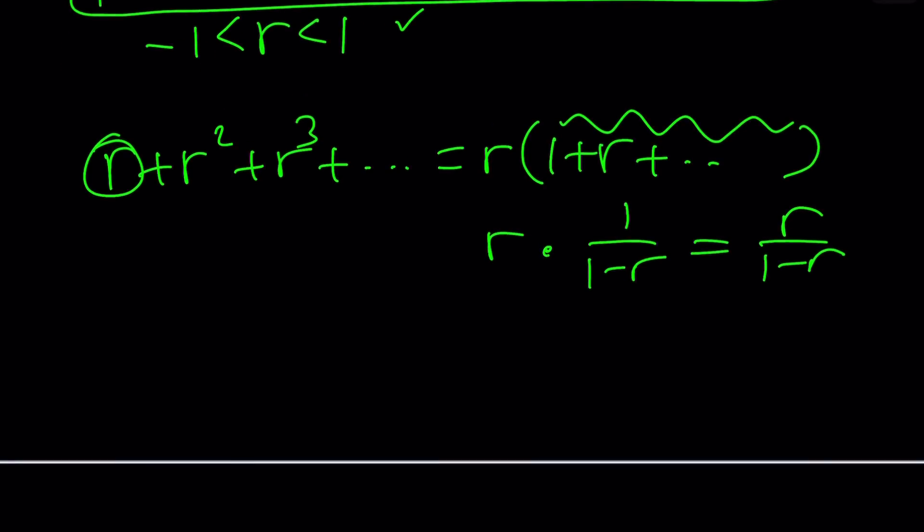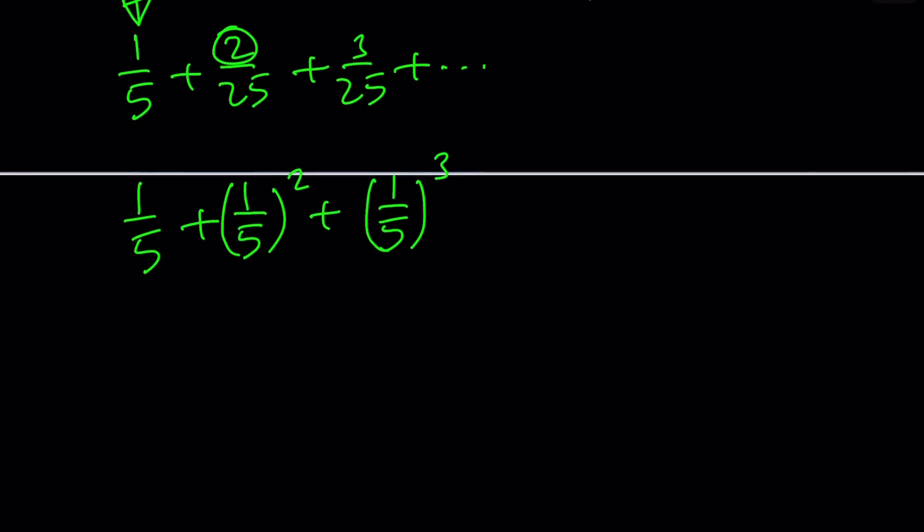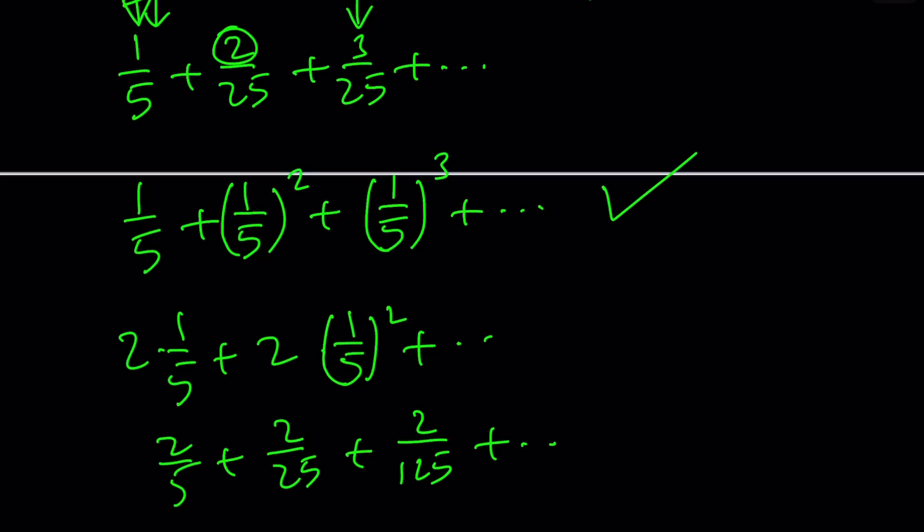So how do we use this to evaluate our sum? If you look at our sum carefully, you're going to realize that if your first term isn't 1, like let's say you've got a sum like this, you could evaluate it exactly the same way, just take out an r, and now the inside we know is 1 over 1 minus r, so this just becomes r over 1 minus r. And if the first term is different from r, you can do the same thing.